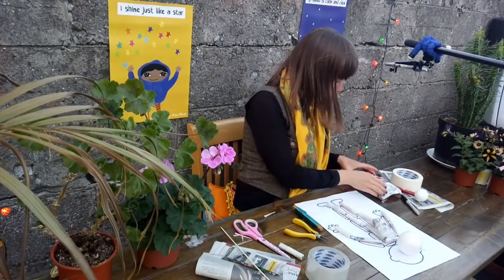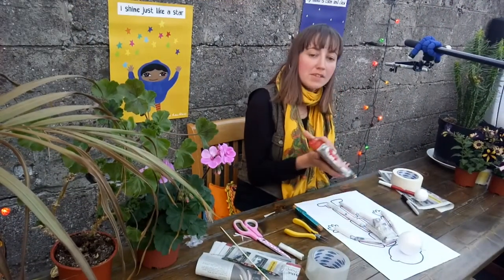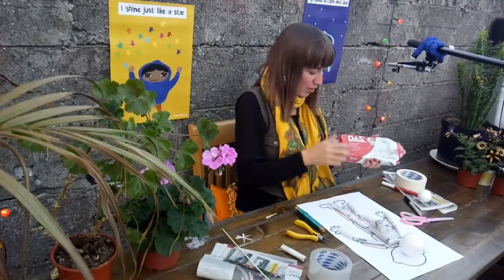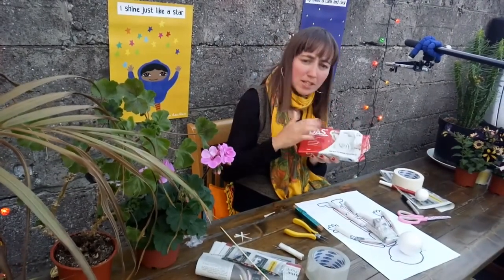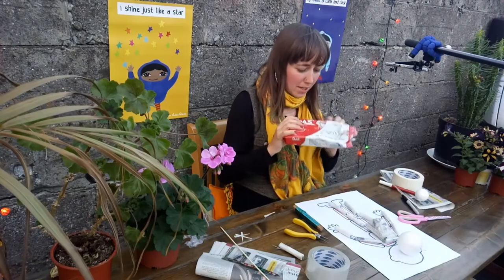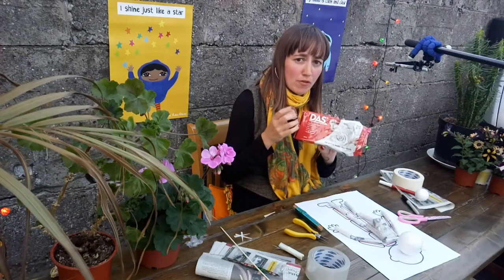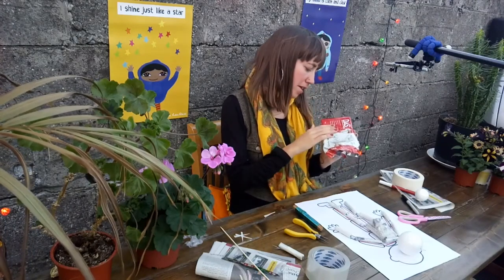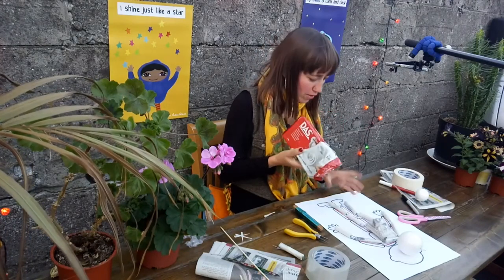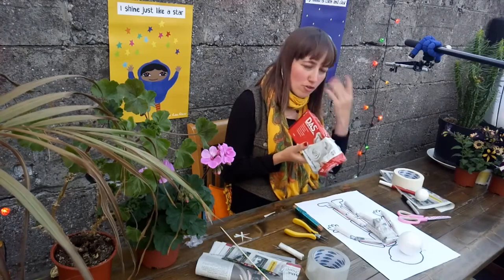Now the next step is the hands and the feet. So this is the last material that we need—I forgot to mention at the beginning. It's DAS modeling clay, so it's air drying. You don't need to put it in the oven to dry or anything, and it takes a couple of days for the feet or the hands or the face to dry.